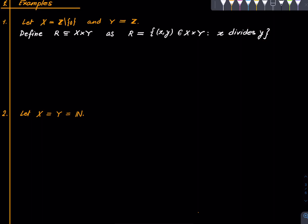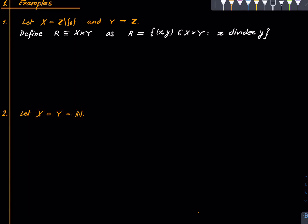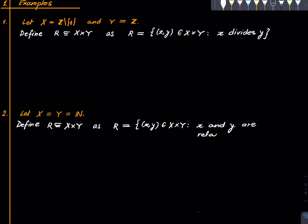Here is another relation: this time x and y are both the natural numbers, and one may define the relation that records which elements of x are relatively prime with which elements of y. Relatively prime means that if you have a prime divisor of x then it cannot be a divisor of y — there are no prime divisors common between x and y, and hence no common divisors except 1. This is also an example of a relation.